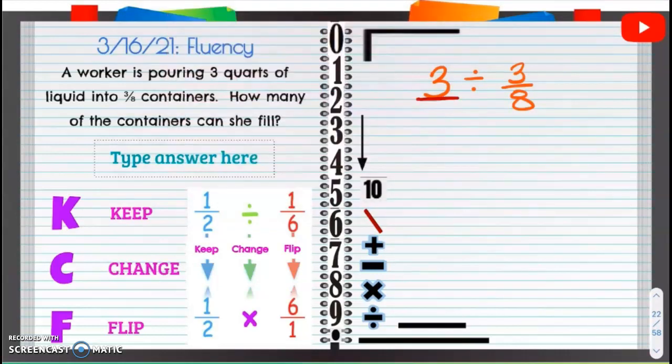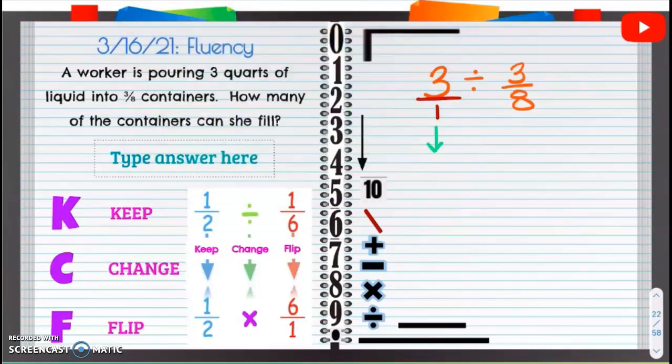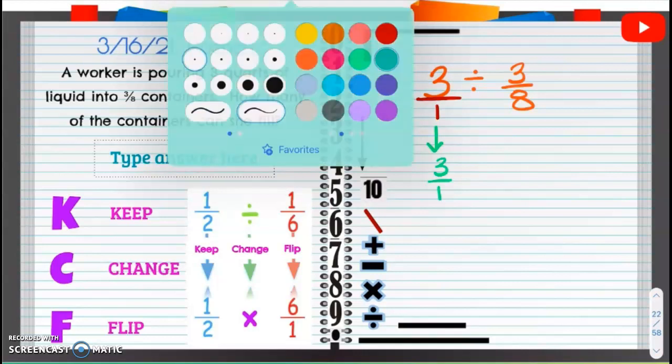We can always put a whole number over one. That still is three divided by one, that's still three. Now we're going to keep the first fraction, so KCF, so three over one.